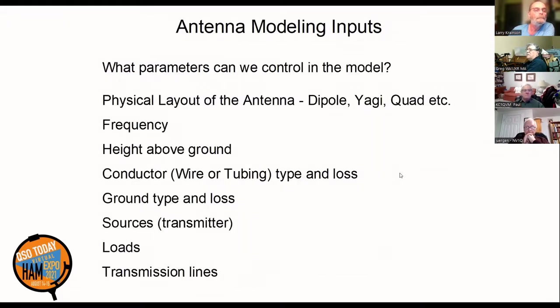What do we have to tell the model? We tell it the physical layout of the antenna, whether it be a dipole, Yagi, quad, or vertical. We tell it the frequency, height above ground, the conductor type (wire or tubing and losses), the ground type and losses, and we place a source at the antenna. If we have any loads, traps, or anything in the antenna, we can describe those. We can also hook up a transmission line to model the overall antenna system.